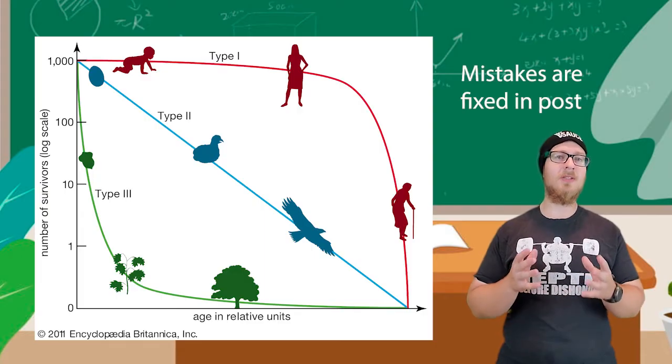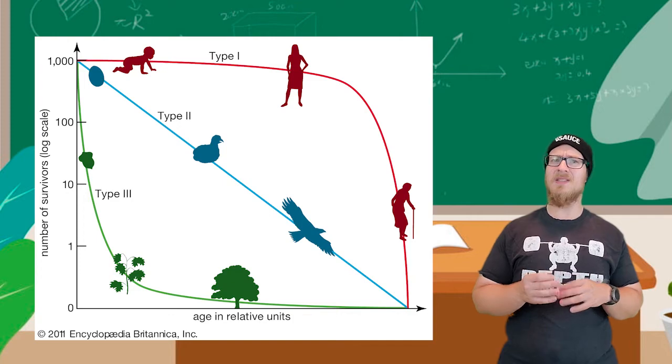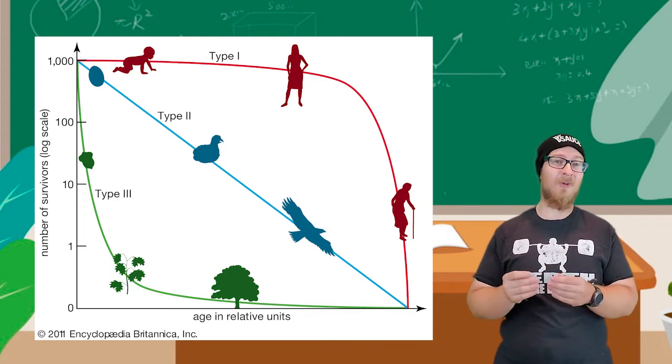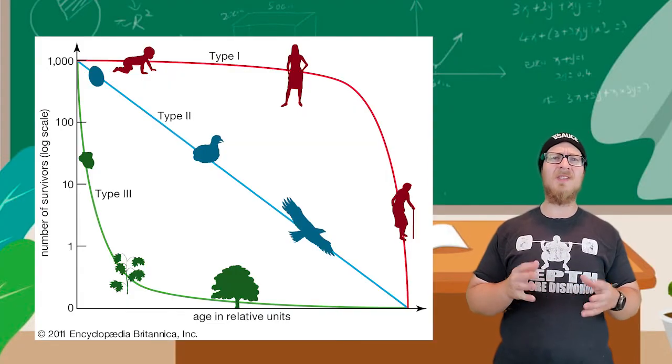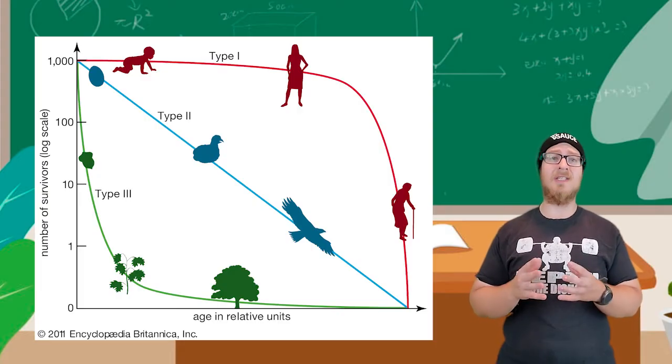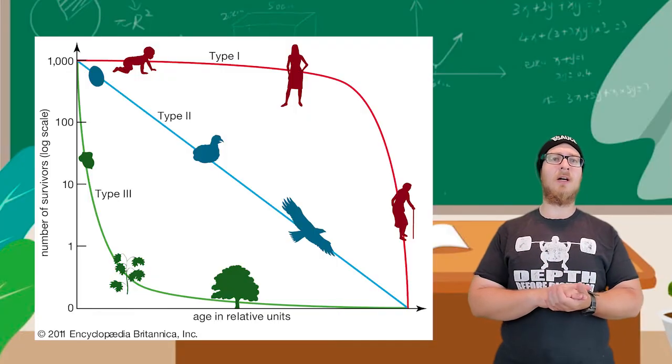Type 2 survivorship curves are linear. And what that really means is that your probability of dying at a certain age simply increases for every year those organisms are alive. This is very typical of birds where they have slightly different risks and predators between their egg, fledgling, and adult life cycles.